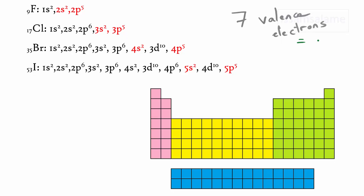So if I want to locate these elements in group 17, this is group 17 and this is row 1. As you can see, fluorine is in row 2, chlorine in row 3, bromine in row 4, and iodine in row 5. So I placed them all under each other like this. In case you find it difficult to place elements in the periodic table, I will keep a link in the description below showing you how to place elements according to their electronic configuration in the periodic table.